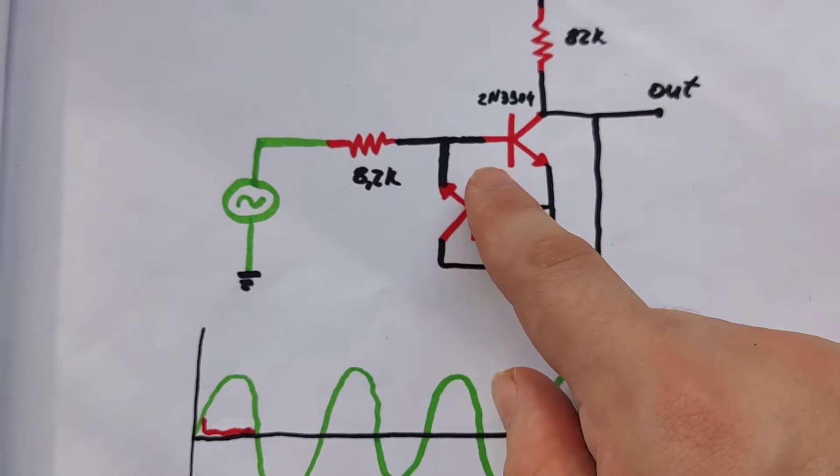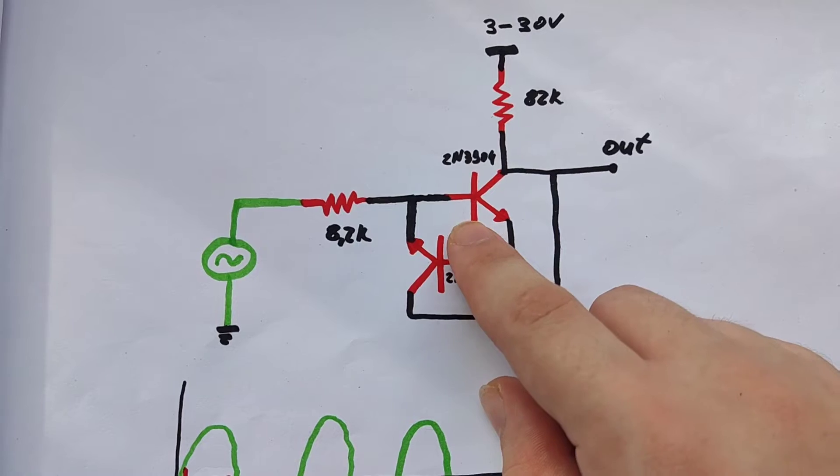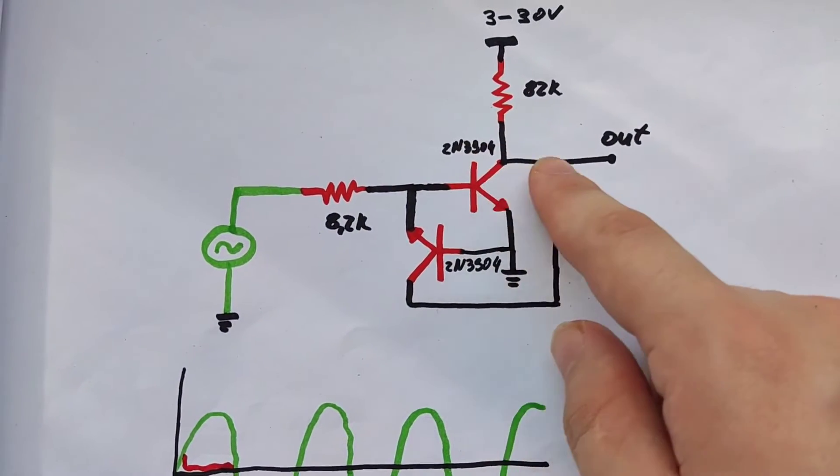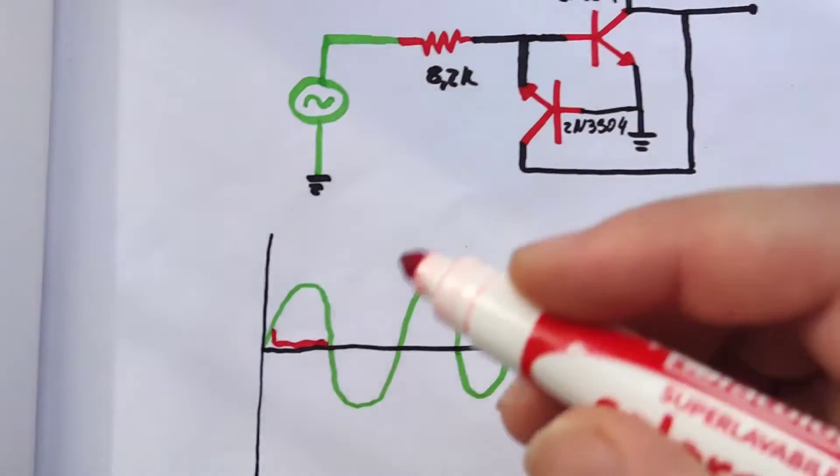But what would happen when the voltage at the base is between 0 and 0.6? In that case, the first transistor does not conduct, so the voltage at the output is high.